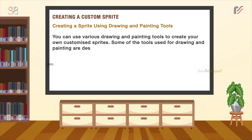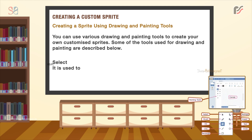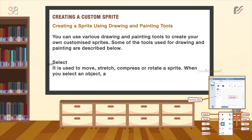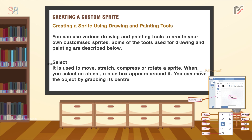Some of the tools used for drawing and painting are described below. The Select tool is used to move, stretch, compress or rotate a sprite. When you select an object, a blue box appears around it. You can move the box by grabbing its center and moving the mouse.